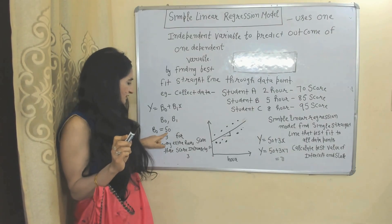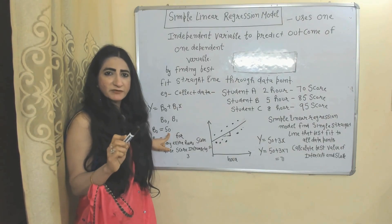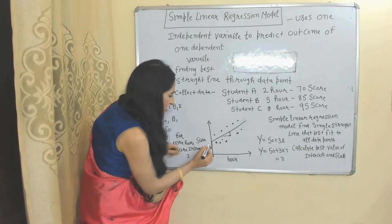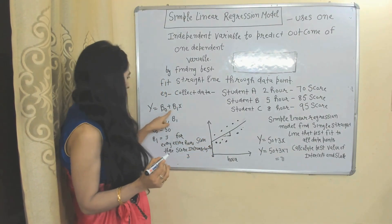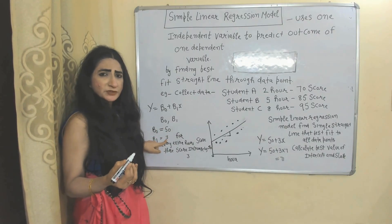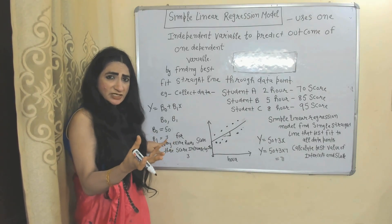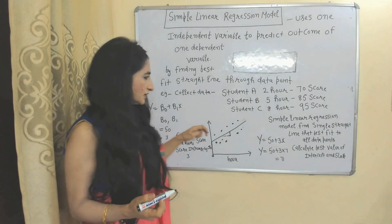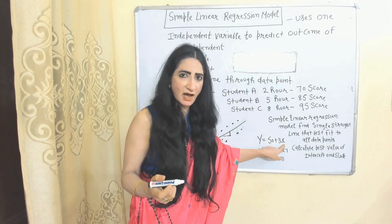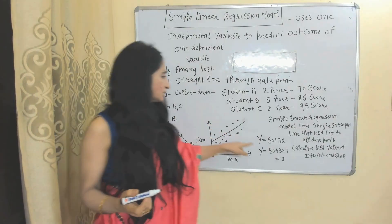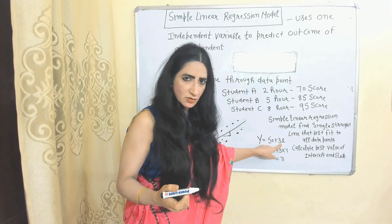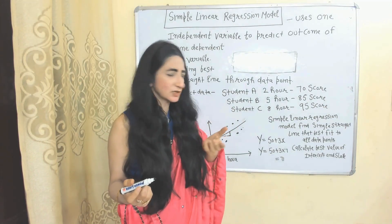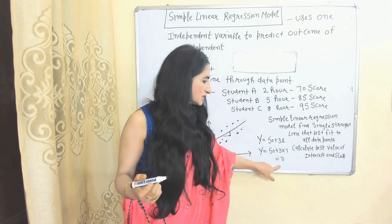Suppose this model finds the intercept equal to 50, meaning at 0 study hours students can receive a score of 50. The slope is found to be 3, meaning every extra hour of study gives a 3-point increase in score. So to predict marks for a student who studied 7 hours: substitute X = 7, intercept = 50, slope = 3 into the equation. Solving gives 71. Based on this prediction, students who study 7 hours are expected to receive a score of 71.